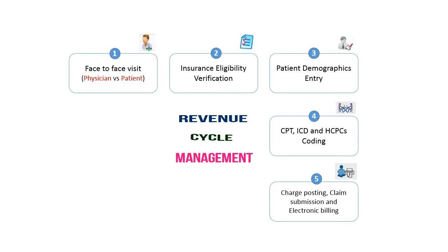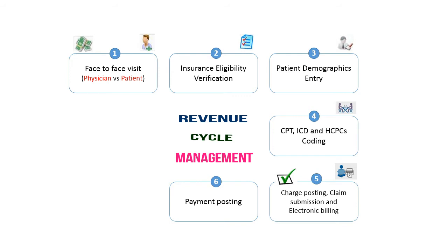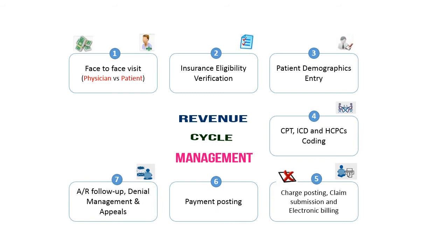The billing department will assign the appropriate dollar value to each procedure. Once the billing process is done, they send the claims to payment posting, where the physician gets the medical reimbursement from the insurance. If anything goes wrong — any mistakes happen — the claim gets denied.